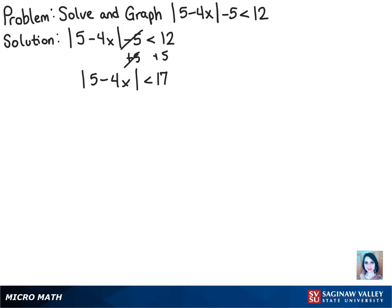Now we can get rid of the absolute value signs by putting negative 17 is less than 5 minus 4x is less than 17 down instead. That way we have both the positive and negative option, and notice that we dropped the absolute value sign because of that.